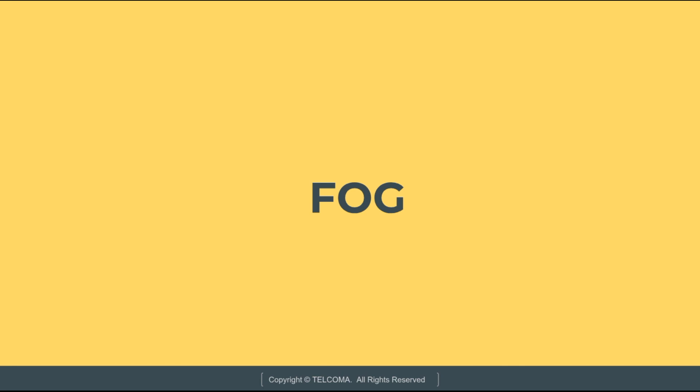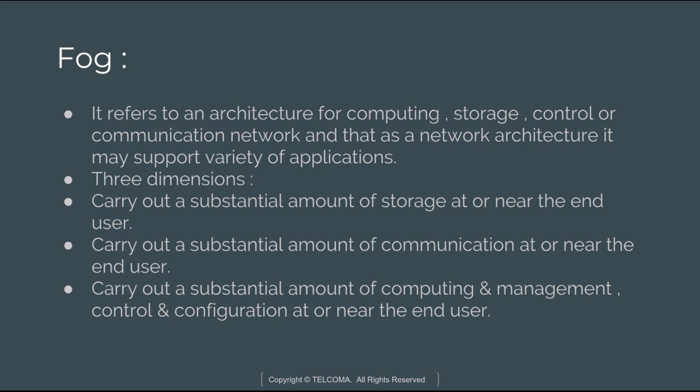In the fog architecture, there is a division between each layer of the network — a division between the control plane and the data plane, and a division between the cloud and the fog — which can support various application domains. Fog architecture basically refers to an architecture responsible for computing, storage, control, and communication, and it can support a variety of applications. It is essentially an architecture for the cloud of things.